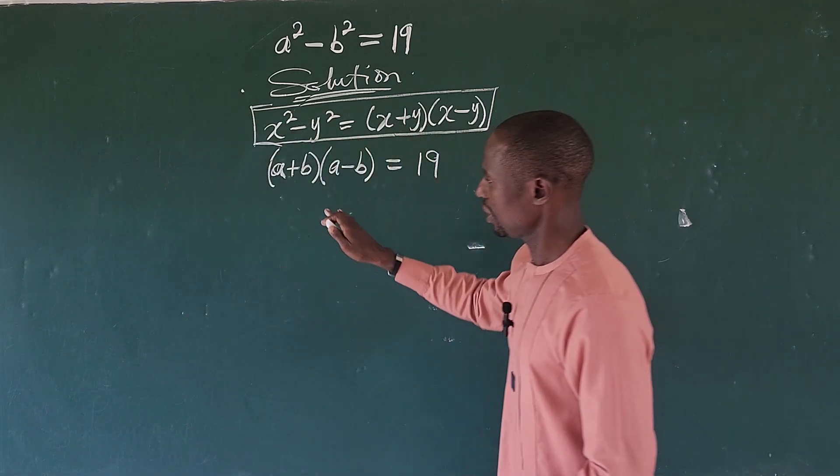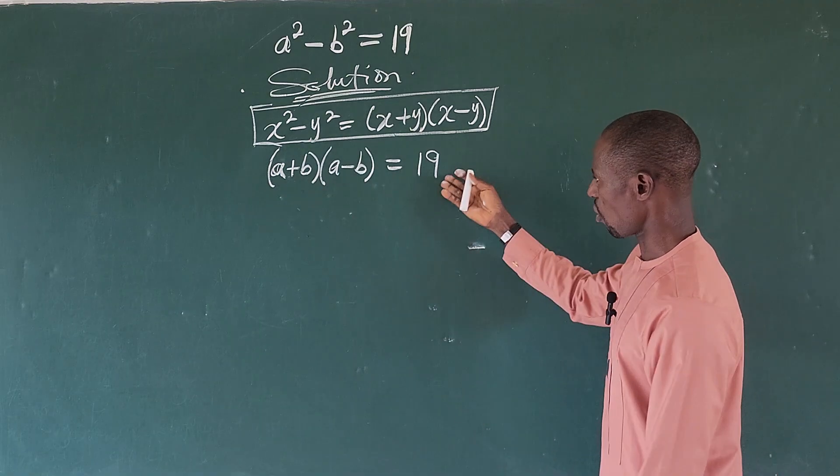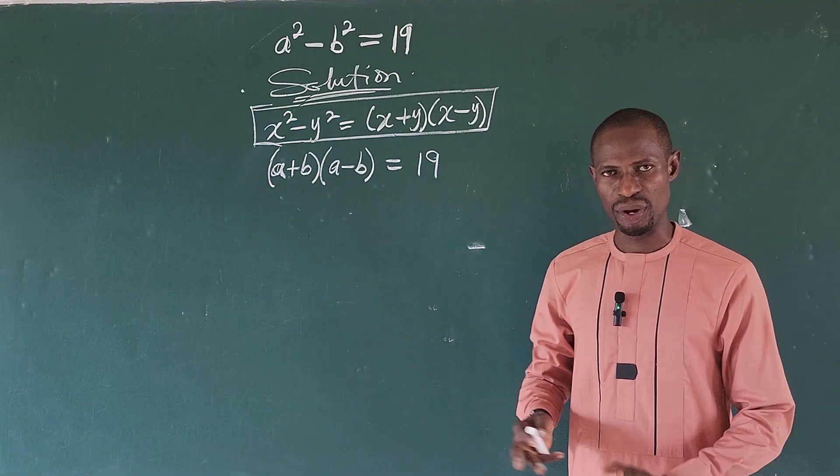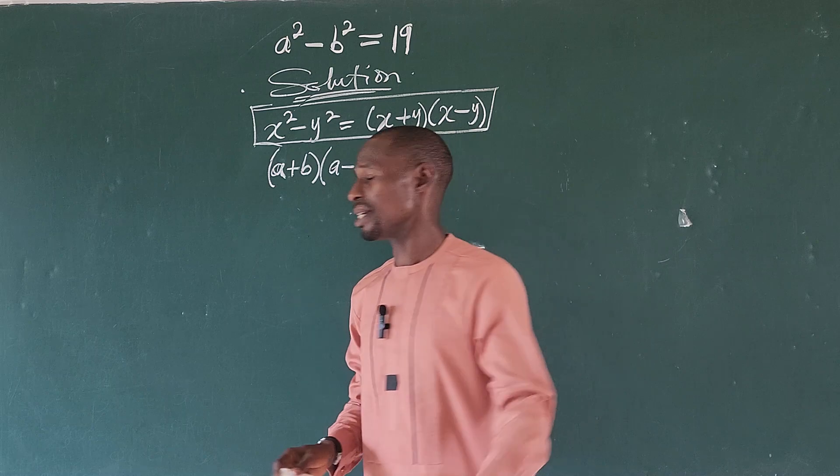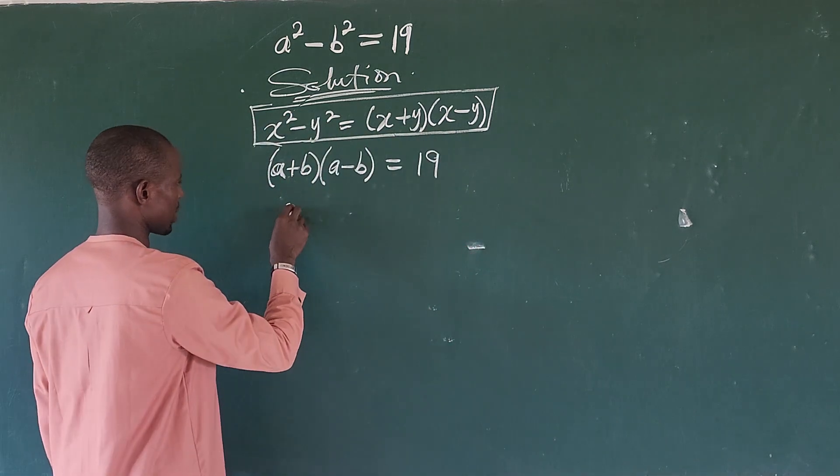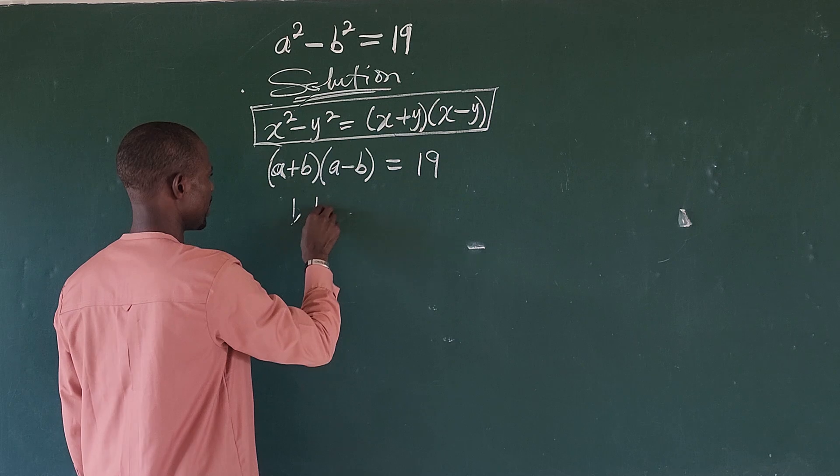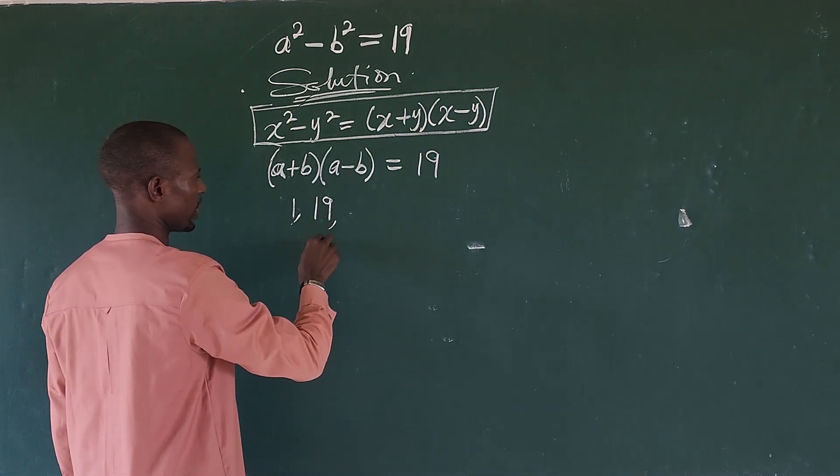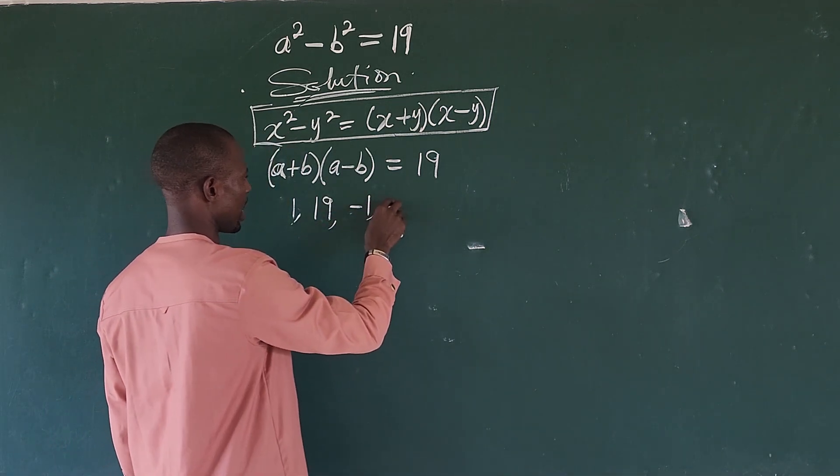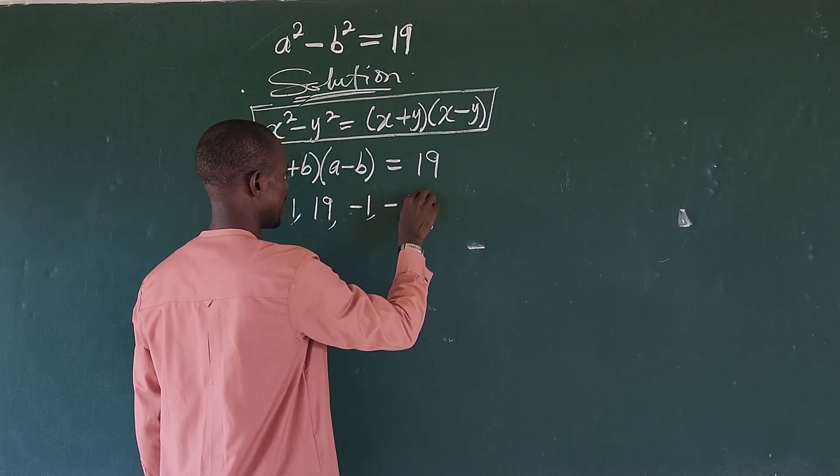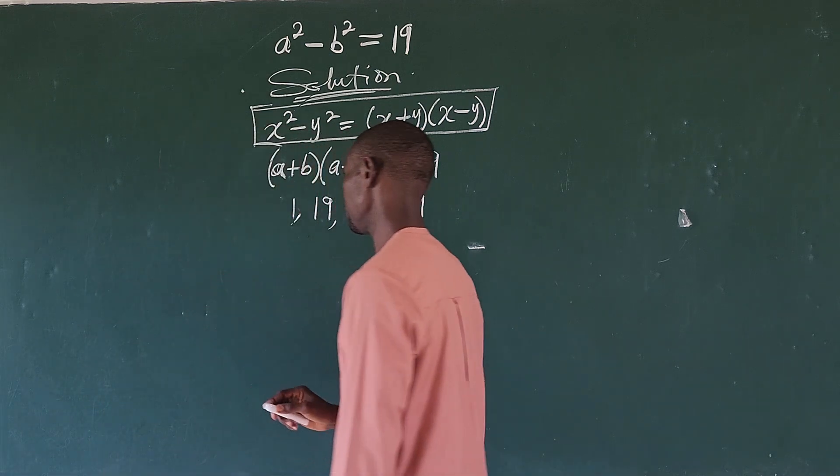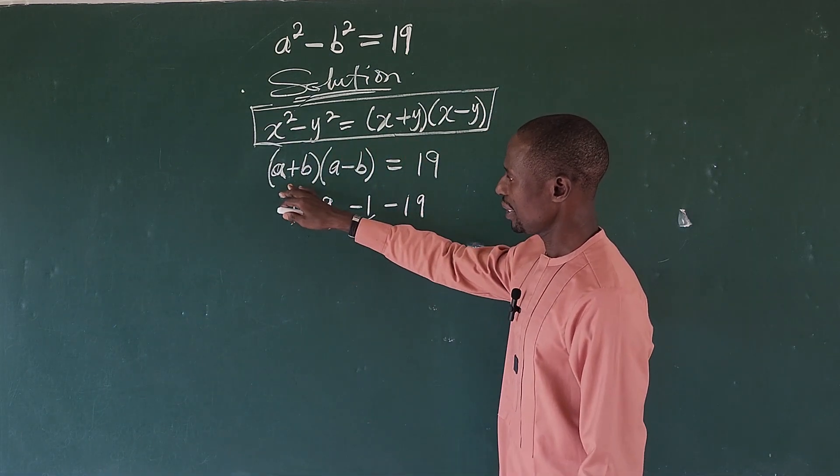So we are having a product on this side of the equation. So let's bring out all the factors of 19 and we all know that the factors of 19 give us: we have positive 1, then we also have positive 19, then we equally have negative 1, then we equally have negative 19.